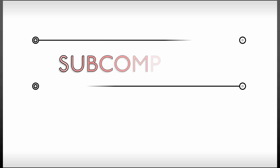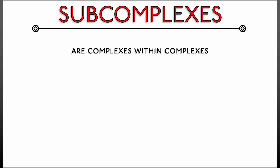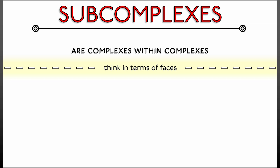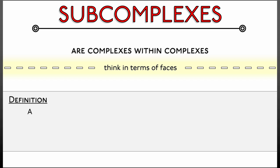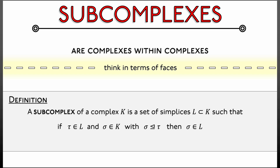Having seen the notion of a simplicial complex, let's turn to the idea of a subcomplex — roughly speaking, a complex within a complex. To formalize that, let's think in terms of faces. A subcomplex of a complex K is a set of simplices L within K such that: if tau is a simplex of L and sigma is a simplex of K with sigma being a face of tau, then sigma must be within L.